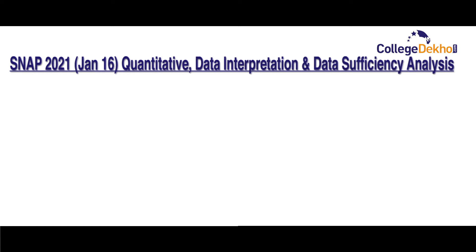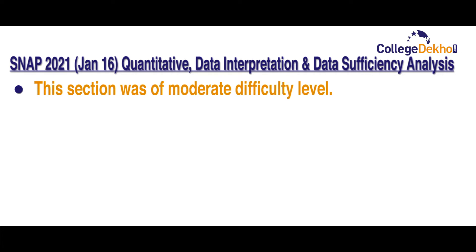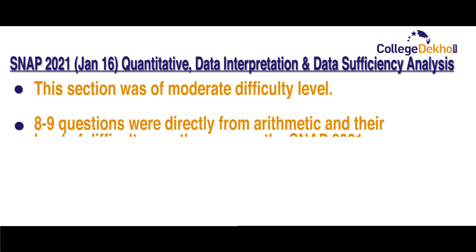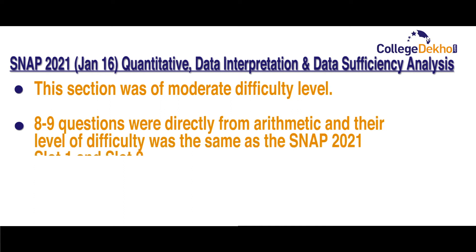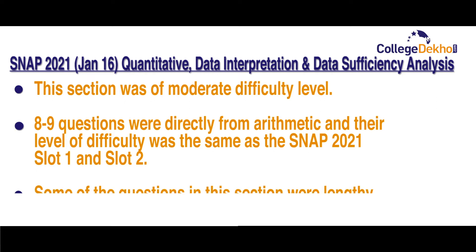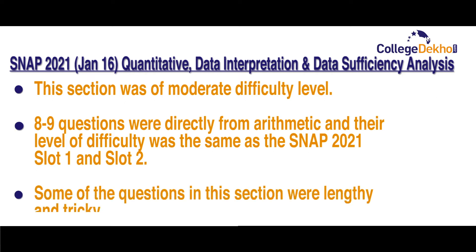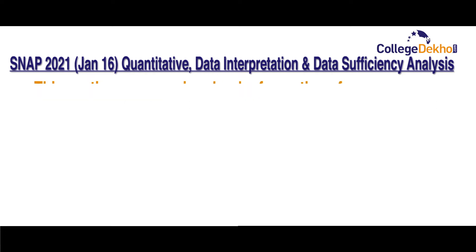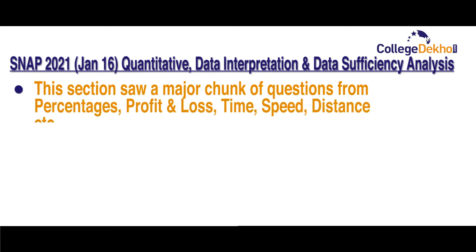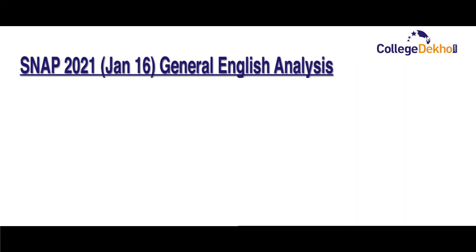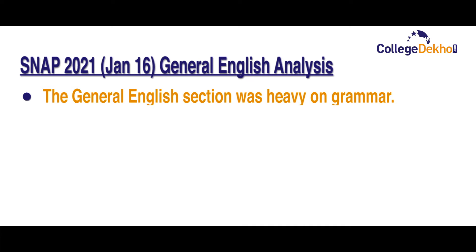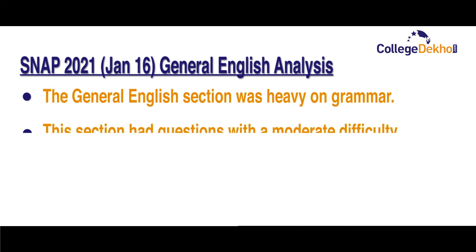Now let us analyze the Quantitative, Data Interpretation, and Data Sufficiency section. This section was of moderate difficulty level. Eight to nine questions came directly from arithmetic, and their difficulty level was the same as SNAP 2021 Slot 1 and Slot 2. Some questions were lengthy and tricky. The section saw a major chunk of questions from percentages, profit and loss, time, speed, distance, etc.